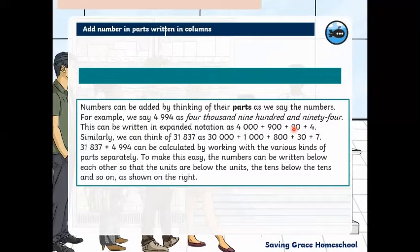Numbers can be added by thinking of their parts as we say the numbers. For example, this number 4,994 can be written in expanded notation as 4,000+900+90+4. Similarly, we can think of 31,837 as 30,000+1,000+800+30+7. These can be calculated by working with the various kinds of parts separately: the tens of thousands, the thousands, the hundreds, the units, and the tens.